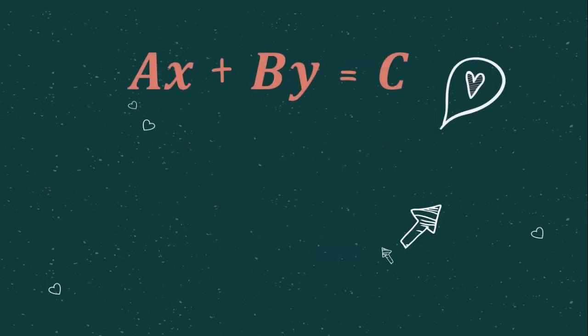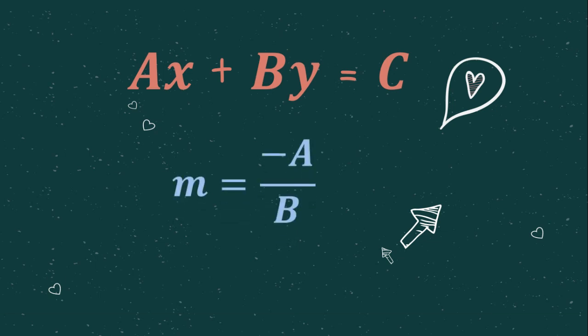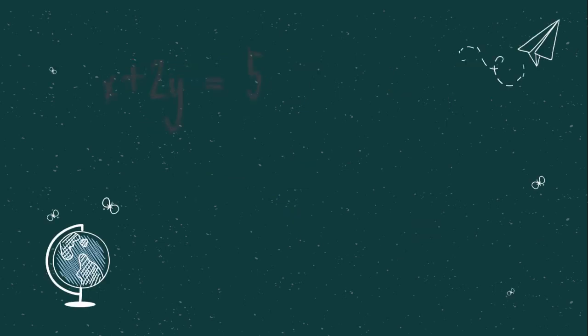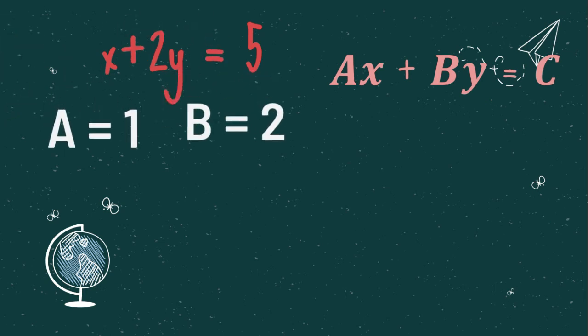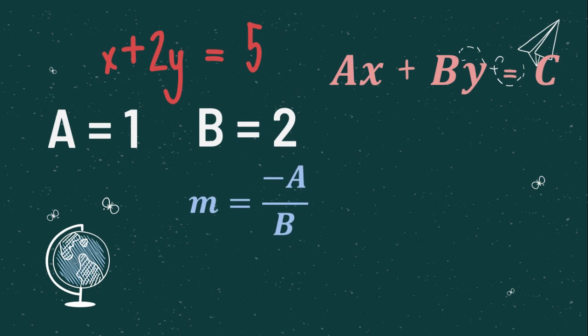Now let us find the slope using the equation. Remember we have the standard form ax plus by equals c. We use the formula m equals negative a over b. For x plus 2y equals 5, our standard form gives a equals 1 and b equals 2. Substituting into the formula: m equals negative 1 over 2. So the slope is negative one half.